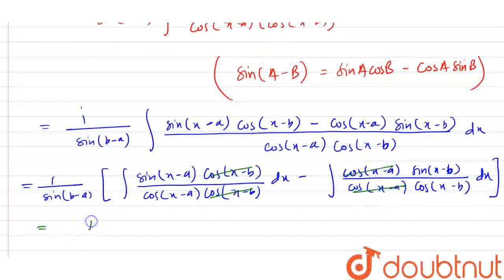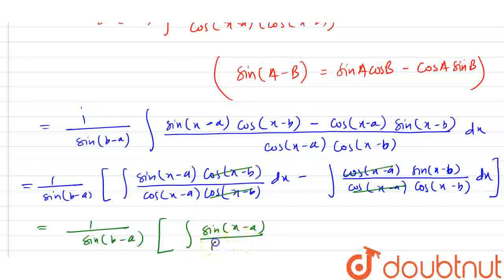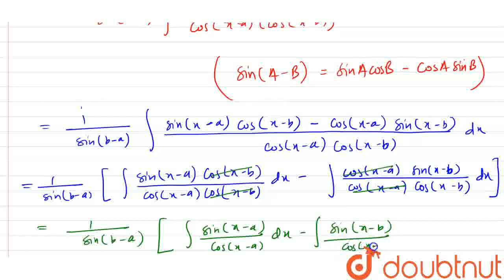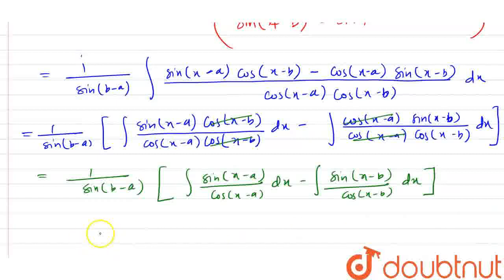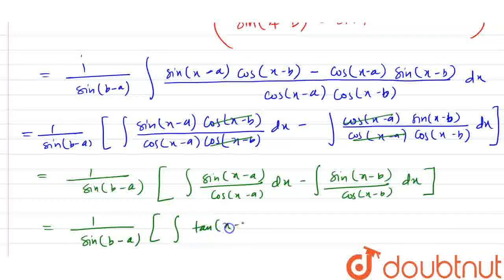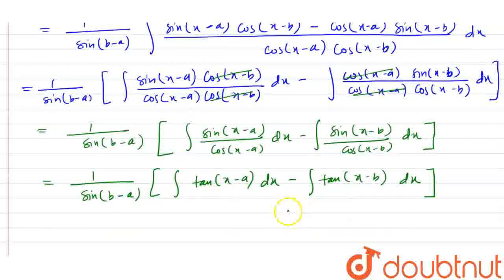So the integration simplifies to 1 divided by sin(b minus a), bracket of: integration of sin(x minus a) divided by cos(x minus a) dx, minus integration of sin(x minus b) divided by cos(x minus b) dx, bracket closed. Since sin divided by cos equals tan, this equals 1 divided by sin(b minus a) times the bracket of integral of tan(x minus a) dx minus integral of tan(x minus b) dx.